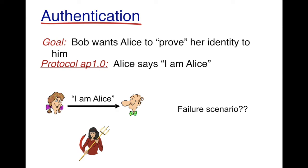The goal here is that Bob and Alice want to communicate with each other, and Bob wants Alice to prove her identity to him. Let's start with the simplest protocol we can think of: Alice says to Bob, 'I am Alice.' So what is the failure scenario of this protocol?